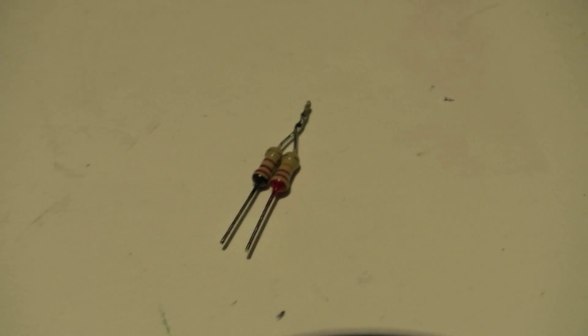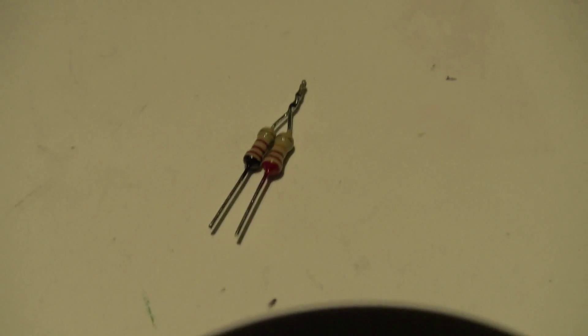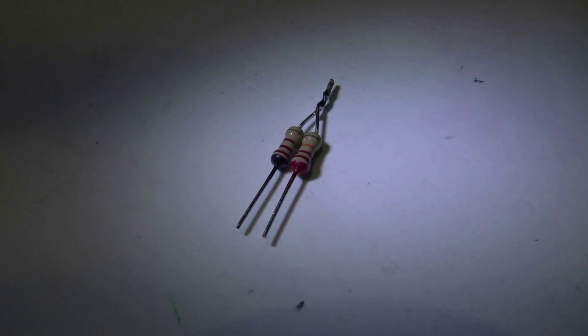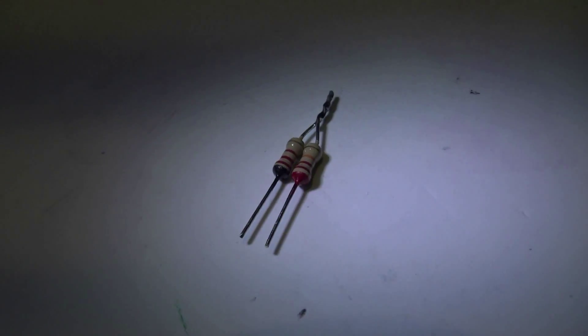Right, so the first thing you want to do is solder the ends on one side, so you've got the positive and negative fly leads.